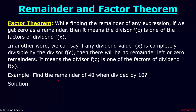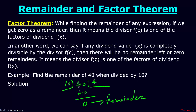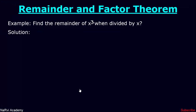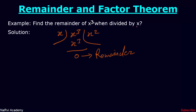For example, find the remainder of 40 when divided by 10. If we divide 40 by 10, we will not get any remainder — we get 0 remainder. We can also understand that 10 is one of the factors of 40. Similarly, find the remainder of x³ when divided by x. We are not getting any remainder because x³ is completely divisible by x, and x is one of the factors of x³. We will discuss the polynomial remainder theorem in our next video.